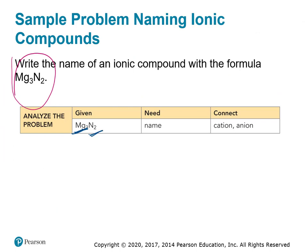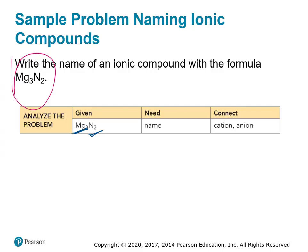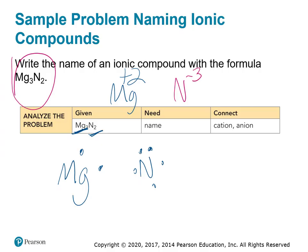We could double-check that it was written correctly. If I look at magnesium, I know it has 2 outermost electrons. Magnesium would love to lose those 2 and become a plus 2 charge. And nitrogen, found right here on the periodic table, is a non-metal. It has 5 outermost electrons, and it would love to gain 3 more, meaning it would like to become a negative 3 ion.